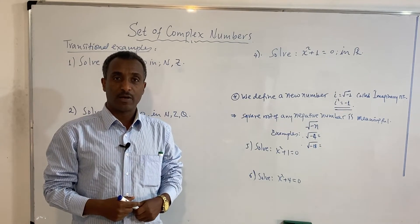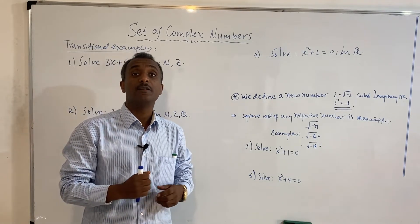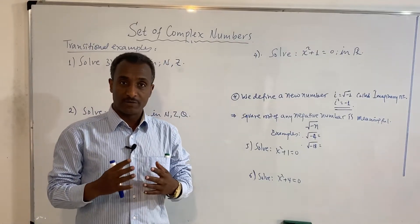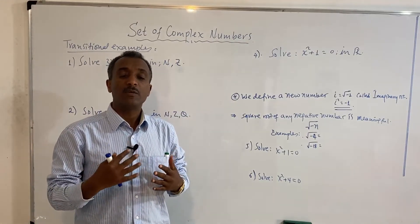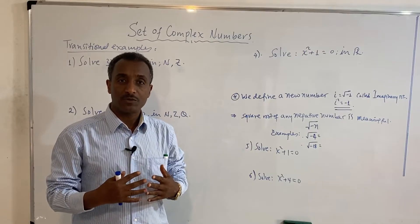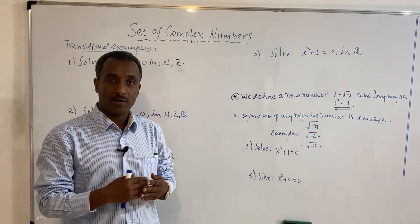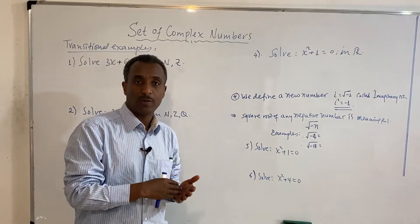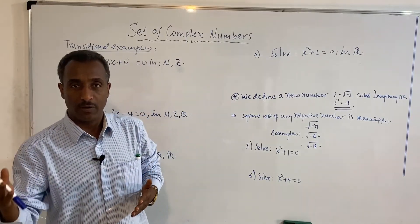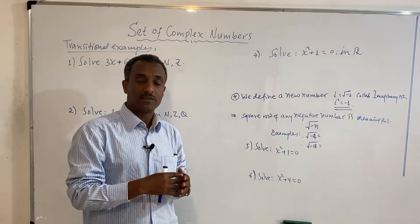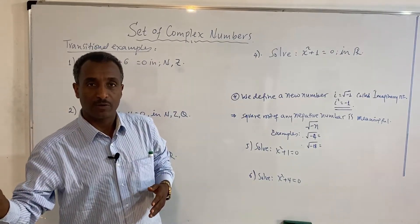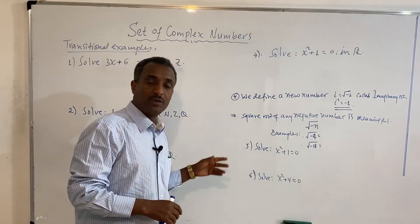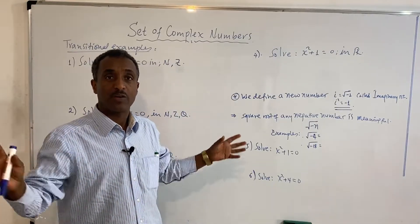Welcome to this video and welcome to our channel! I want to know the set of complex numbers. Here we know what the set of natural numbers is: 1, 2, 3, 4, 5, 6, 7. But they don't include negative 3 or negative 1, so we need to work with the integers.